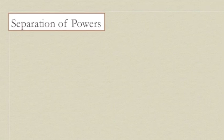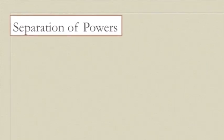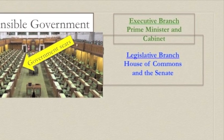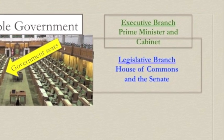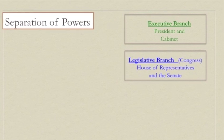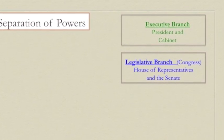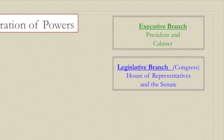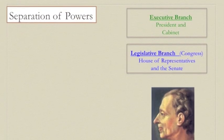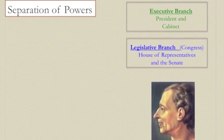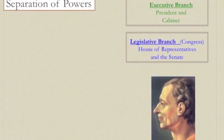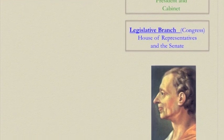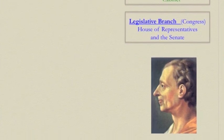Another big difference between Canada and the United States is separation of powers. Canada has responsible government, which exists because the executive branch gets their position of power from the legislative branch. In the United States, the executive branch is elected separately from the legislative branch. See how the boxes look different from Canada's? The American system was created based on the ideas of the Enlightenment philosophers, so they took Montesquieu's ideas seriously — in fact, so seriously that it's against the law for the president of the United States to even sit in on debates in Congress, in order to prevent him from influencing the legislative branch.